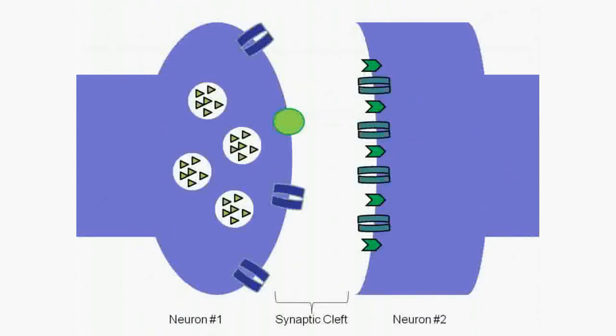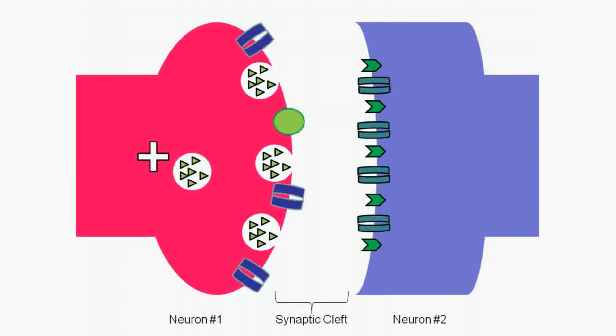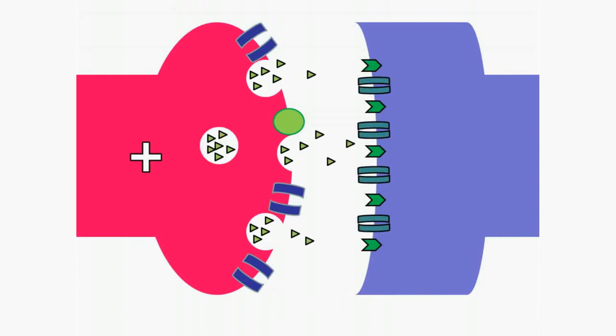At each connection point is a synapse, a small gap between the end of one neuron and the beginning of the next. At these gaps, an electrical signal in the presynaptic nerve cell triggers the release of chemical signals which rapidly travel across the tiny synaptic cleft and bind receptors on the postsynaptic cell.